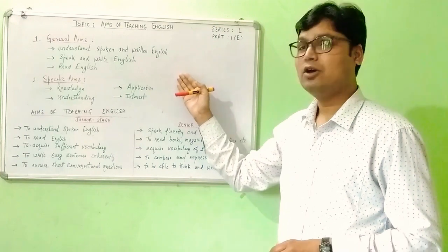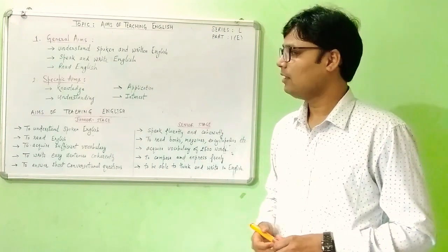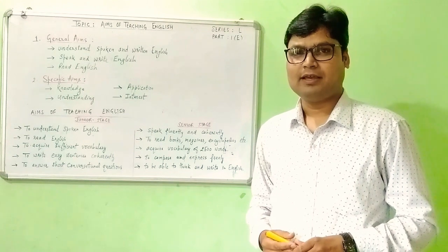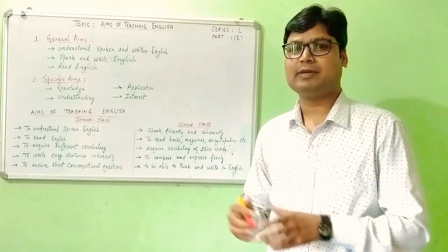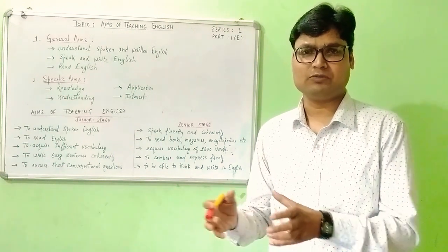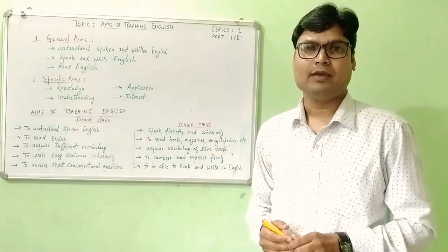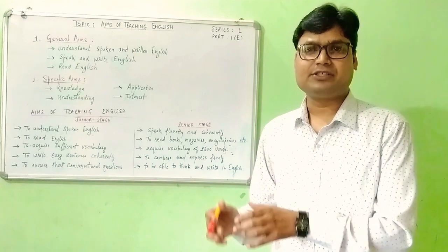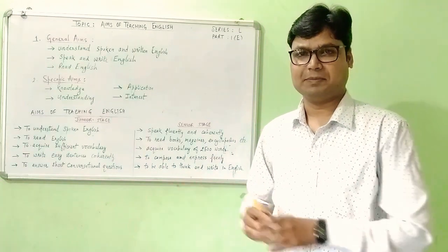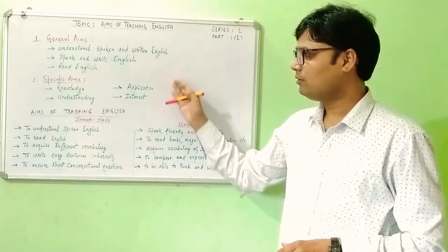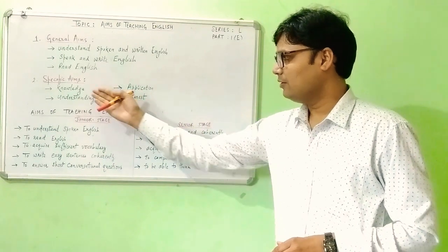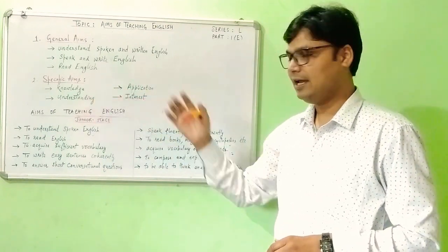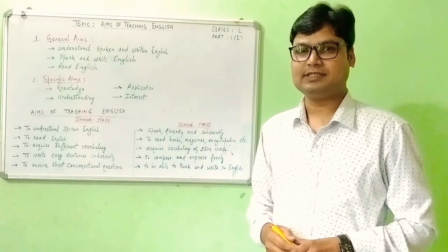These are long term aims. On the other hand, there are specific aims. Specific aims are short term aims and decided for a classroom lecture specifically. These help students and teachers in the direction of their course of action. Therefore, these are knowledge, application, understanding and interest, which are based on Bloom's taxonomy.